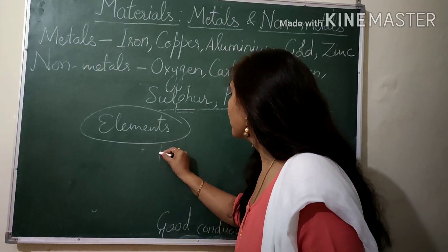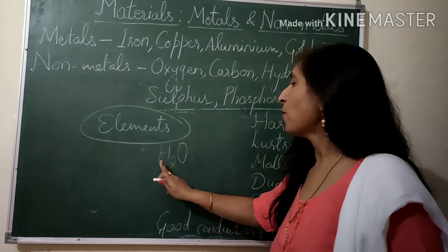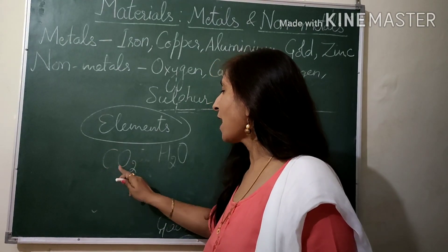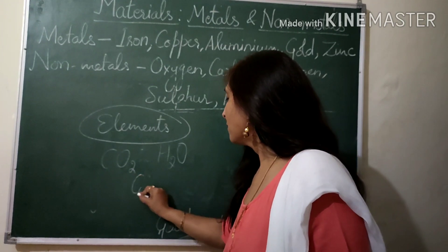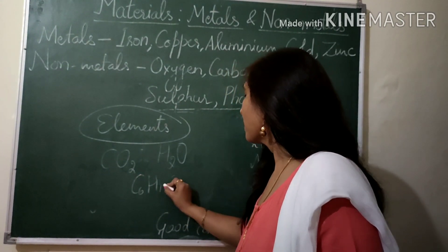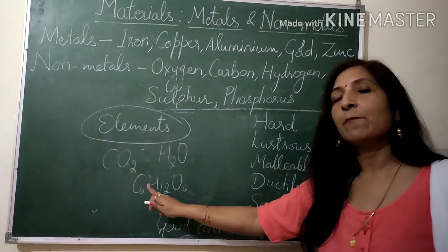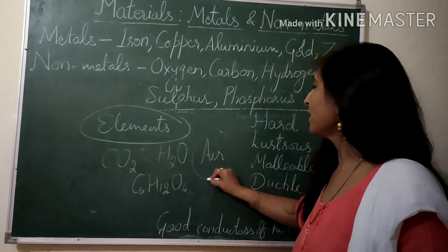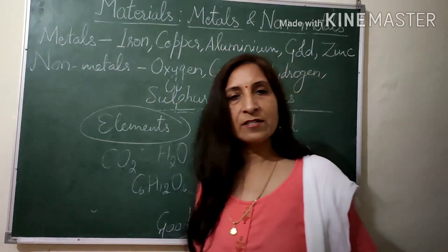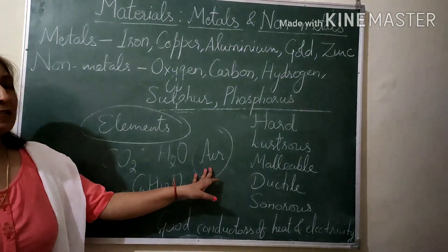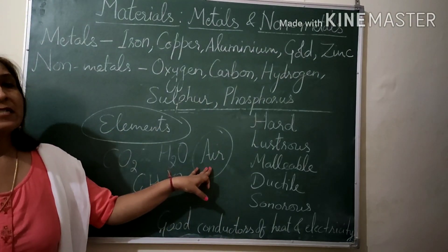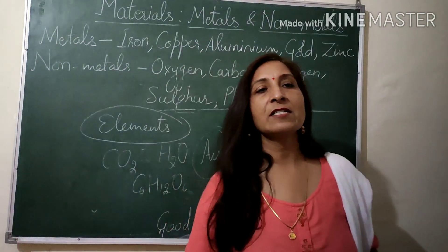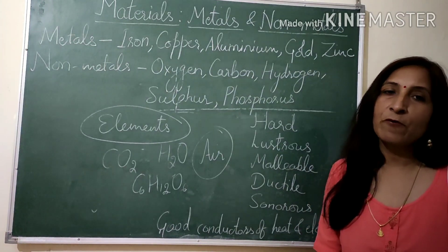Here are a few examples. Water is made up of two elements: hydrogen and oxygen. Carbon dioxide is made up of two elements: carbon and oxygen. Glucose is made up of three elements: carbon, hydrogen, and oxygen. Another example is air — I am not writing any formula for air because it is a mixture; it does not have any single formula. Air is made up of many components, and all those components are actually made up of different elements.